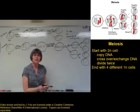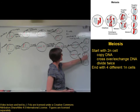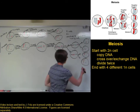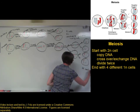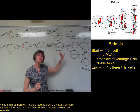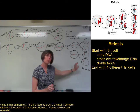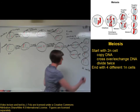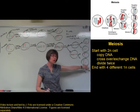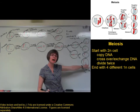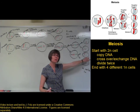When we look at what we get at the end of meiosis, we have 4 cells. These cells are 1N, or haploid — they only have one copy of each chromosome: one copy of the long chromosome and one copy of the short chromosome.